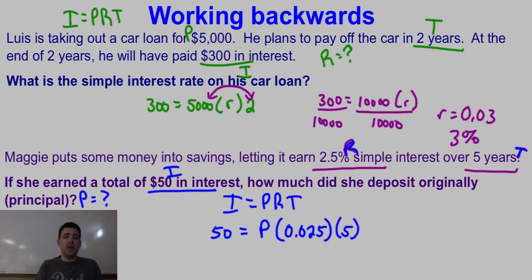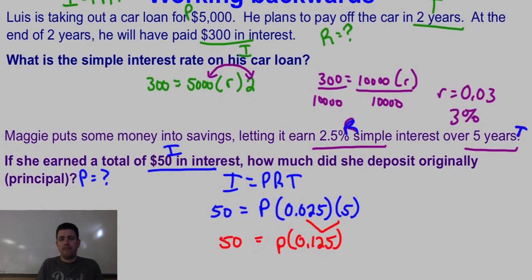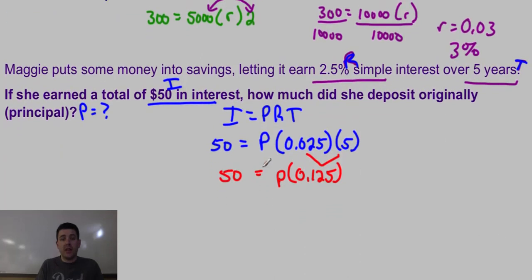Your first step is you can do a little bit of the math right off the bat. Go ahead and do the multiplication you can do. 0.025 times five gives me 0.125 times P equals 50.